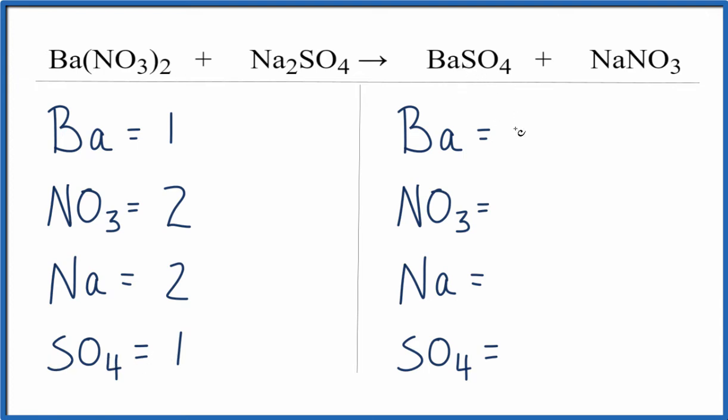On the product side, barium, one. I have one NO3. Sodium, one. And then I have one sulfate. So that makes things a lot faster and a lot cleaner when we try to balance.